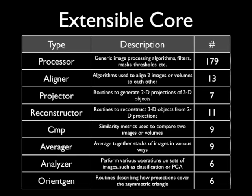EMEN has an extensible core, meaning it's very easy to add new image processing operations to EMEN2. When they're added, they're automatically incorporated into all of the GUIs and command line interfaces in the entire system. If you have your own favorite algorithm you want to add, you just put the code in one particular place — we provide templates — give it a name, tell it what parameters it wants, and it will automatically get integrated into the whole system. There are a variety of different types of objects in this extensible core: processors for image filtration, masking, and thresholding; aligners for bringing 2D images or 3D volumes into register; projectors which take a 3D volume and make 2D projections; and more.